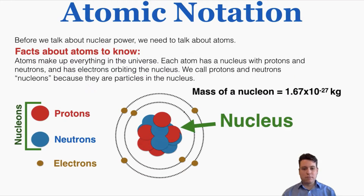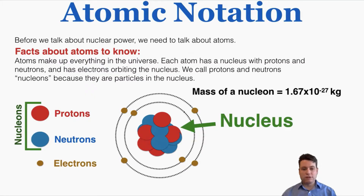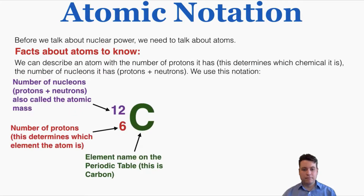Atoms are made of just three particles: the proton, neutron, and electron. Protons and neutrons both exist within the nucleus or center of the atom, while electrons orbit outside of it. Both protons and neutrons are referred to as nucleons because they both exist in the nucleus. A nucleon just means a particle that exists in the nucleus of an atom.